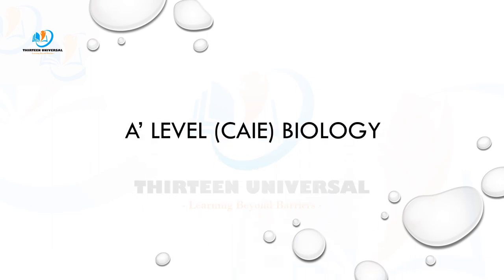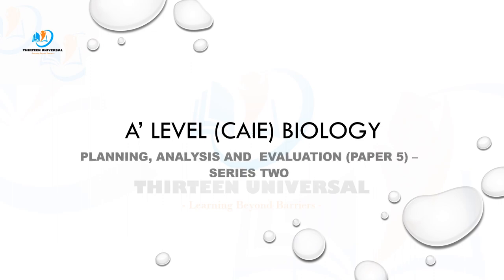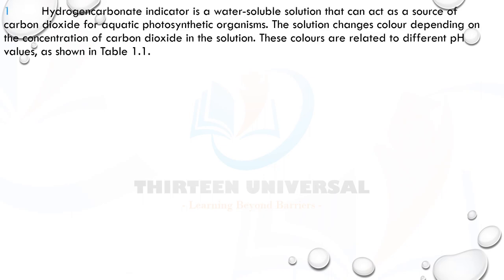Welcome to 13 Universal Learning Beyond the Barriers. This is A-level Biology CIE with Schedule. We are solving questions on Paper 5, which is planning, analysis and evaluation. Get your writing material, calculator and materials. Remember: do not check the mark scheme — try to solve the question first, pause the video, and always read the background questions carefully.